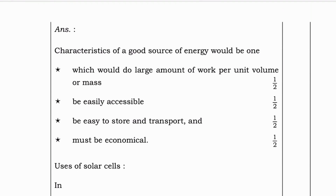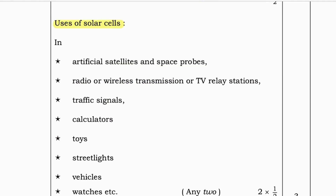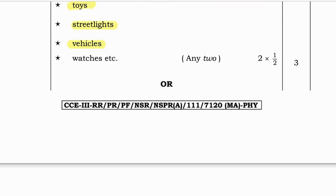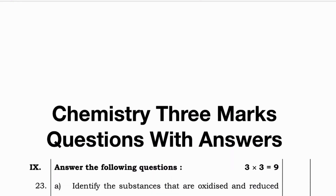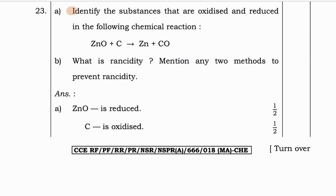Next question: What are the characteristics of a good source of energy? Write any two uses of solar cells. A good source of energy would do a large amount of work per unit volume or mass, be easily accessible, easy to store and transport, and must be economical. Uses of solar cells: they are used in artificial satellites and space probes, and in radio or wireless transmission or TV relay stations, traffic signals, calculators, toys, street lights, vehicles, and watches.